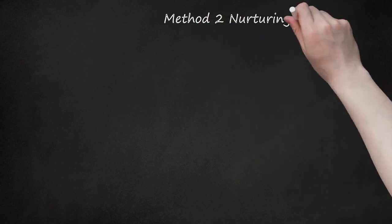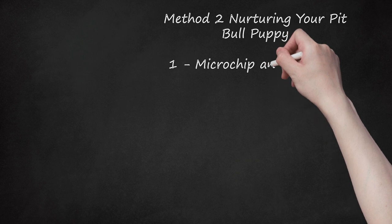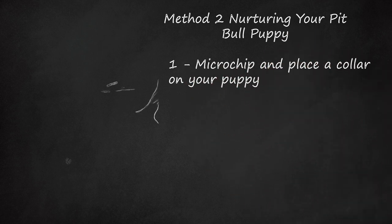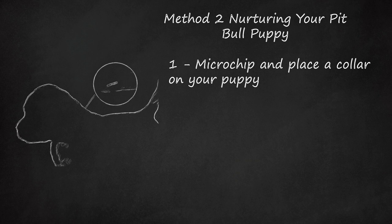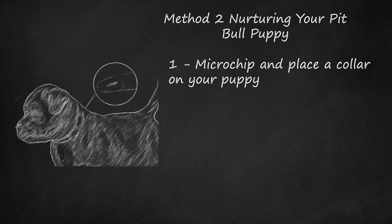Method 2: Nurturing Your Pit Bull Puppy. Microchip and place a collar on your puppy. Get an identifying microchip inserted below your pit bull's skin and put a collar with an identification tag around his neck. These will make it easier to locate your puppy if he gets lost. Pit bulls are good at escaping their yards, so microchipping is important.